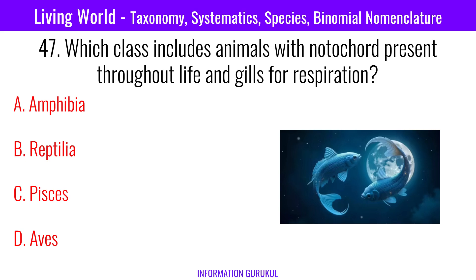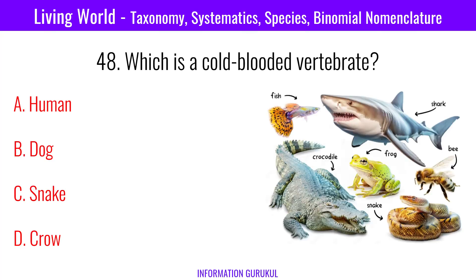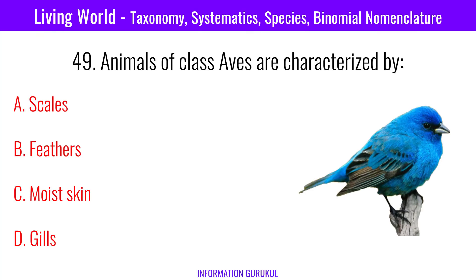Which class includes animals with notochord present throughout life and gills for respiration? Pisces. Which is a cold-blooded vertebrate? Snake. Animals of class Aves are characterized by feathers.